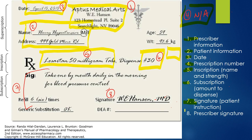Number seven is the signature — this is the patient instruction and it's the most important part as a pharmacy technician. You will need to be able to read the sig codes and know how many refills the patient will have and if the generic is used. In this example, it says take one by mouth daily in the morning for blood pressure control. The patient will be receiving six refills total and the generic substitution is okay — it's been approved by the doctor.